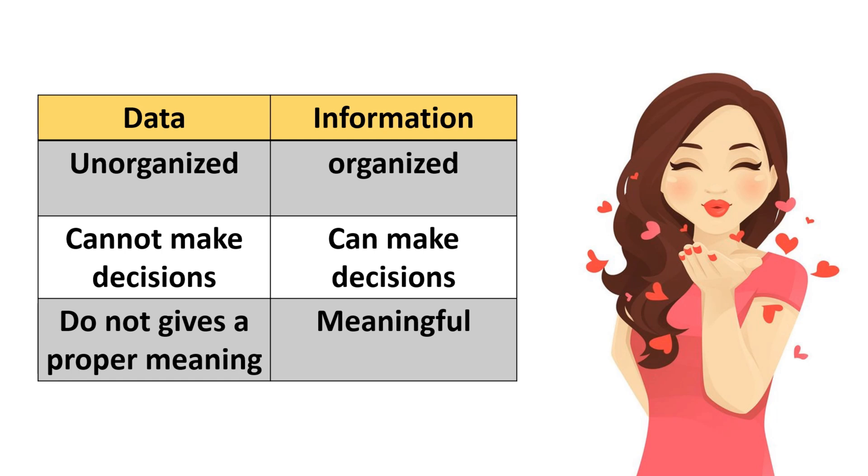is always unorganized, it doesn't contain a meaning, and we couldn't make any decisions from data. But information is already and always organized. We can make decisions with it, and it is always meaningful.